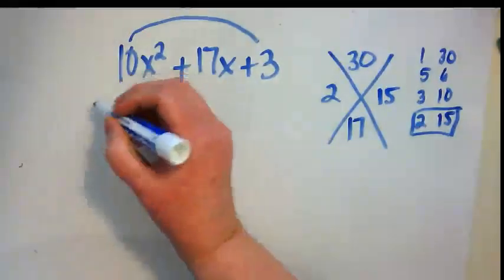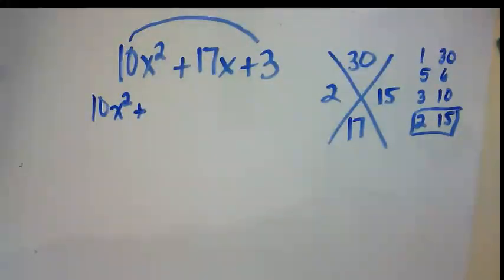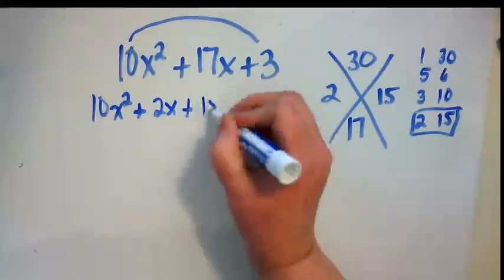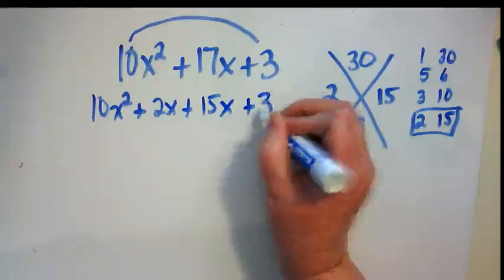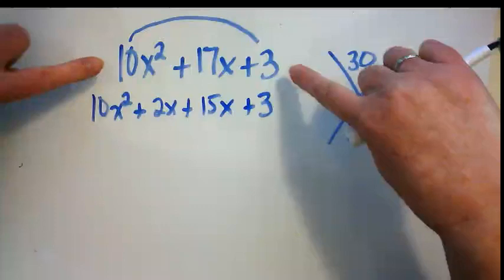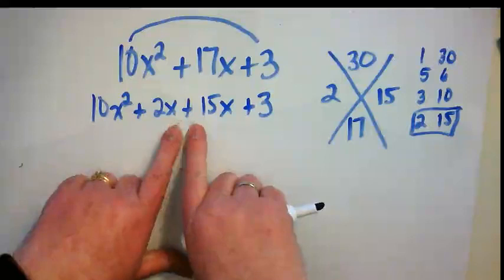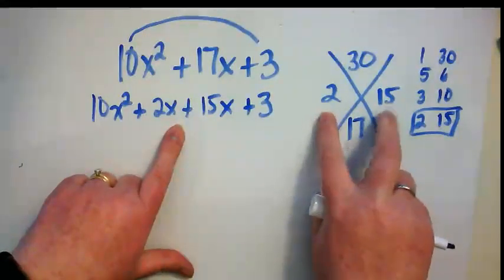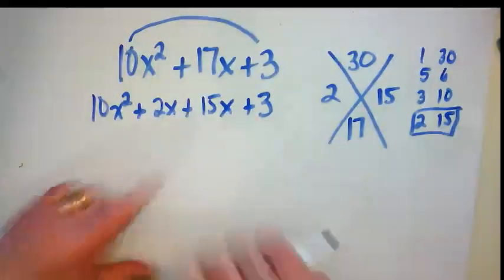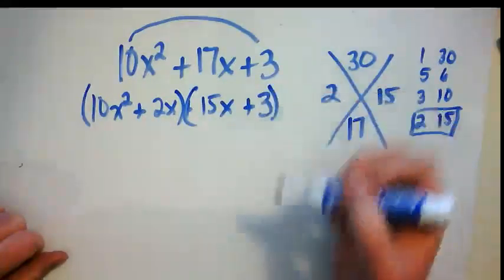So I'm going to rewrite this as 10x squared plus 2x plus 15x plus 3. And I want you to pay attention to where all those parts came from. These two things just got brought down here. We took this and we wrote it because we figured out what those terms were from our x puzzle. And we know we're right if these two get added together and we get that.